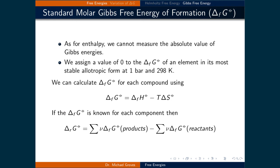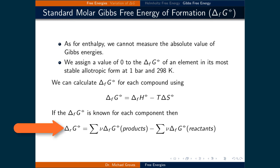As with enthalpy, we cannot easily measure the absolute value of Gibbs free energies. We assign a value of zero to the standard molar Gibbs free energy of formation of an element in its most stable allotropic form at 1 bar and 298 Kelvin. The standard molar Gibbs free energy of formation for each compound can be calculated as the standard molar enthalpy of formation minus the temperature times the standard molar entropy. If these values are known for each component — for instance from a table — then the change in standard molar Gibbs free energy for the reaction equals the weighted sum of the standard molar Gibbs free energies of formation of the products minus the weighted sum for the reactants.